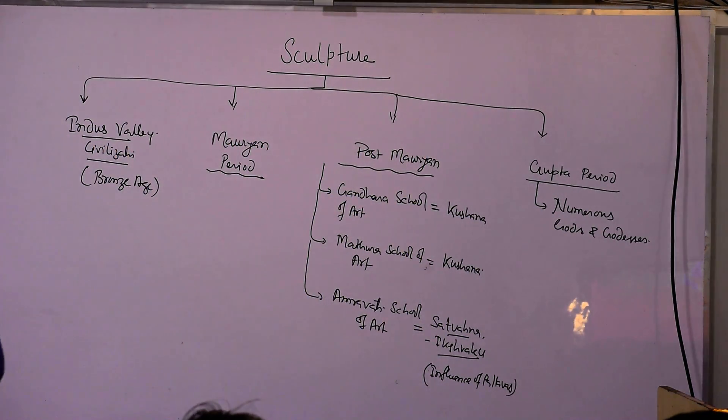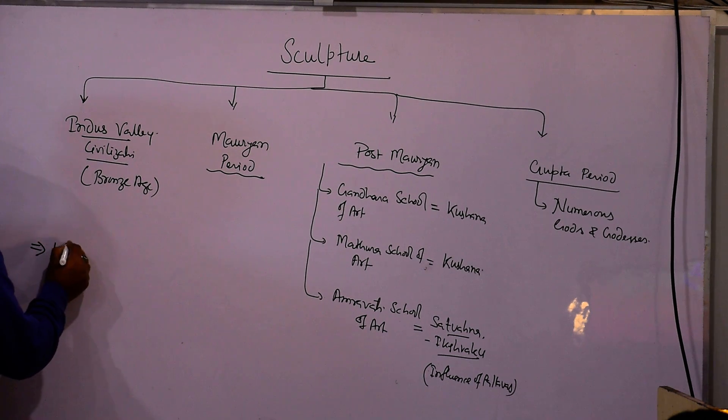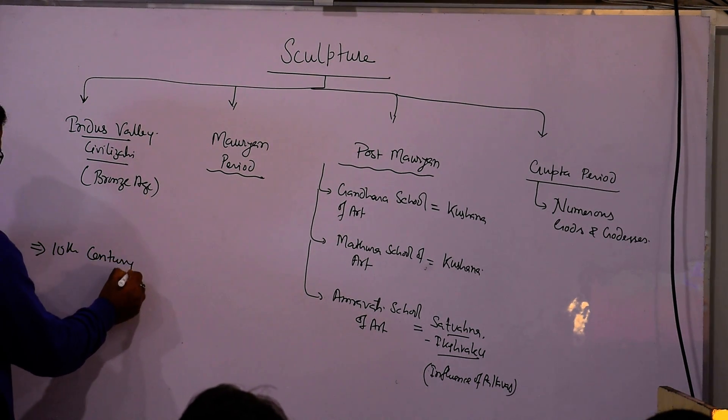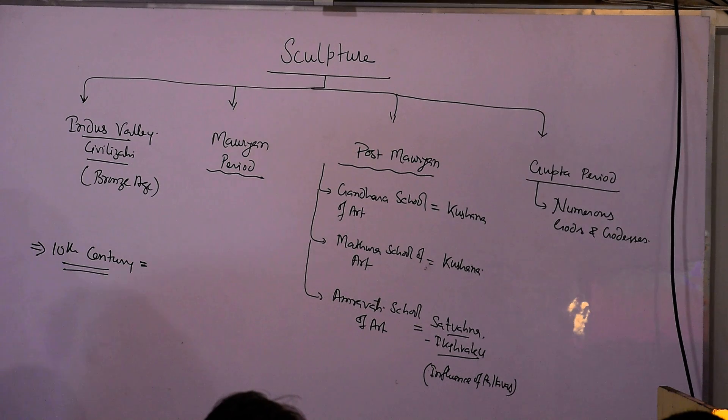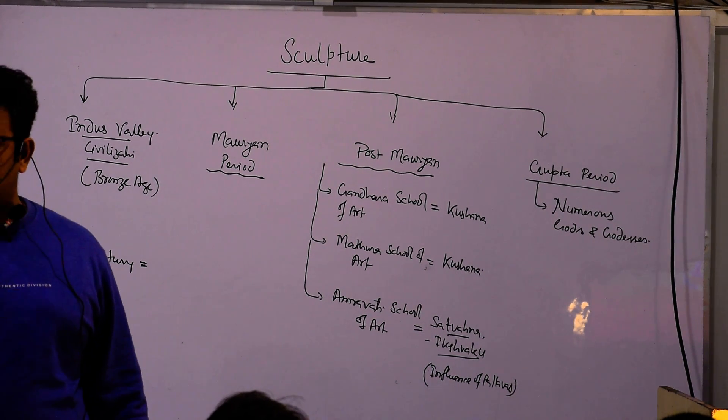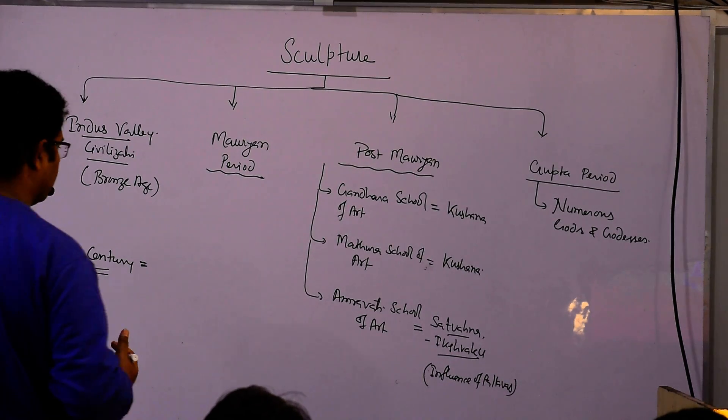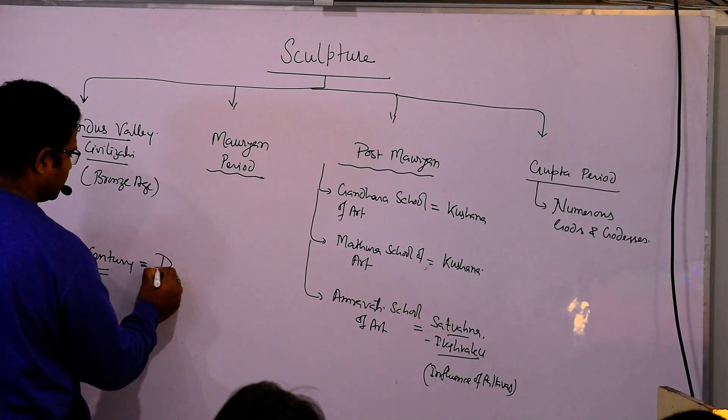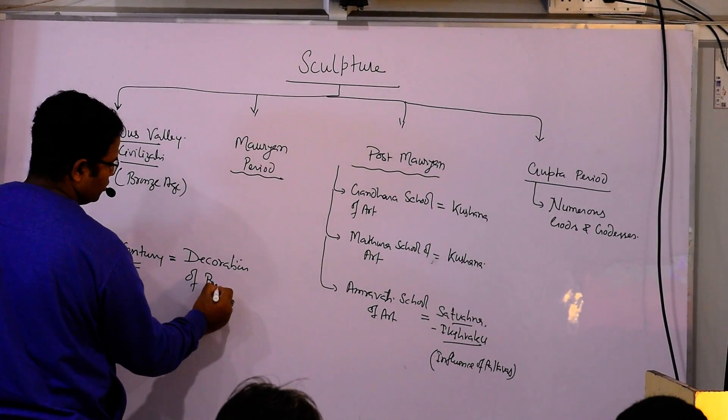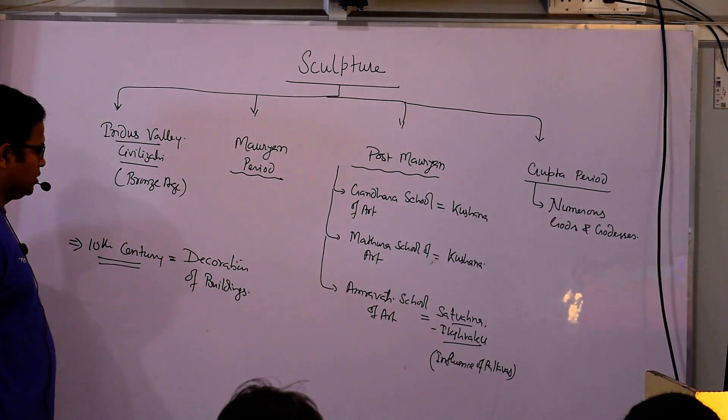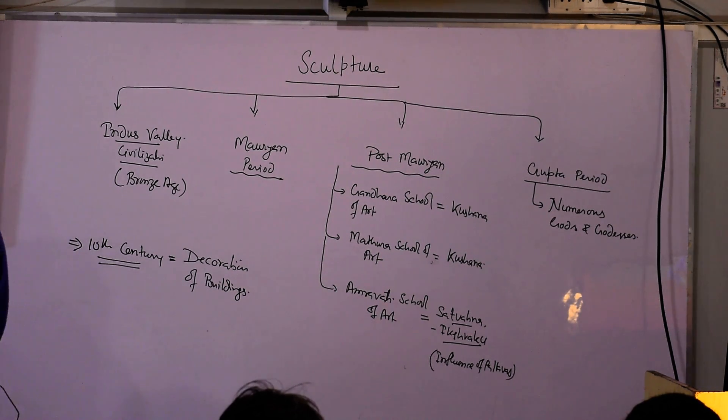If we will go further, 10th century or after that, there is a sculpture which lies only for decoration purpose in the buildings and all. This sculpture was for some kind of decoration. So 10th century onwards, what happened? Decoration of buildings. This sculpture was in the form of decoration.